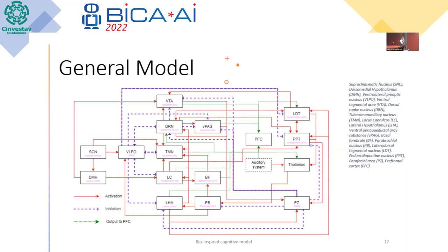In this model we can also see the connections — like activation and inhibition — and the connections to the cortex. But before explaining these connections, we need to know how the components or areas function inside the model.